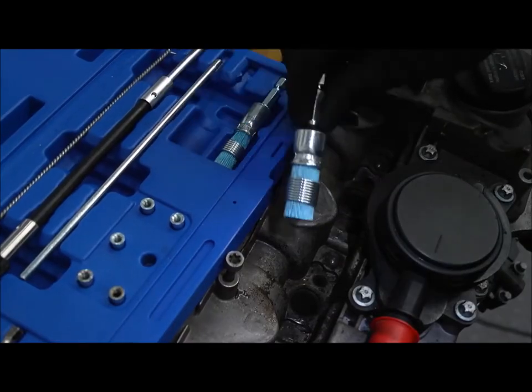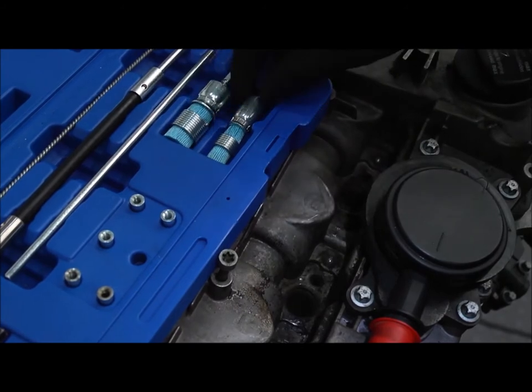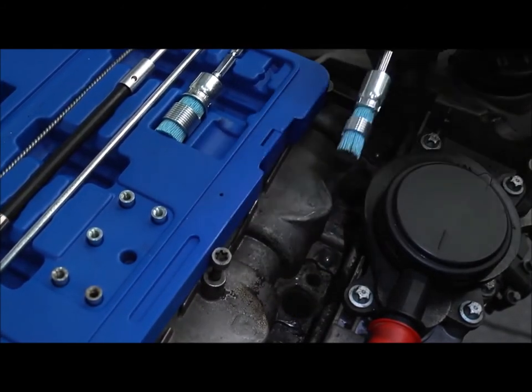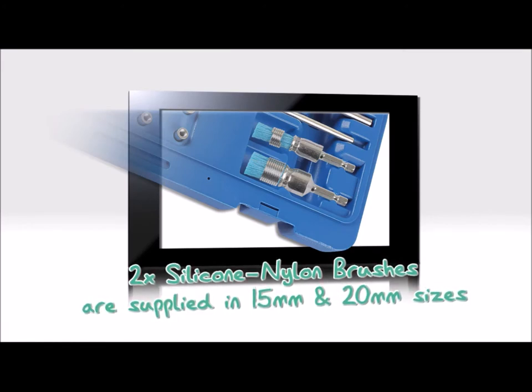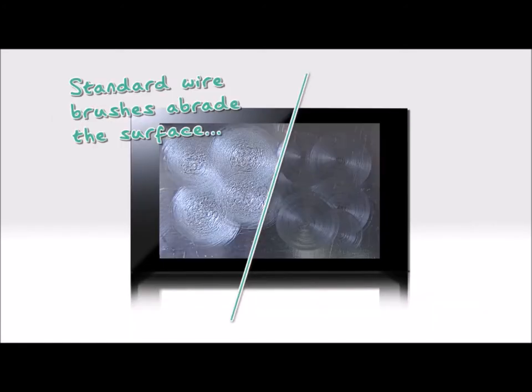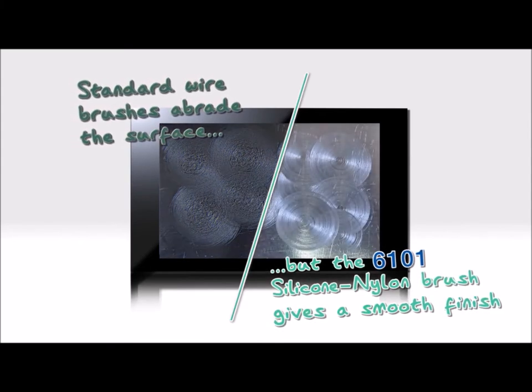Now choose the special silicone nylon bristle base cleaning brush to clean the injector seat area at the bottom of the port. A steel wire brush will tear and abrade the aluminium seat surface, meaning that the seat area may have to be re-cut. The silicone nylon bristles give a smooth and consistent finish to an aluminium surface, particularly important on this sealing surface.